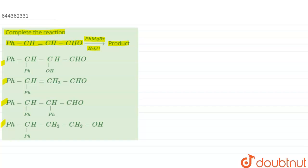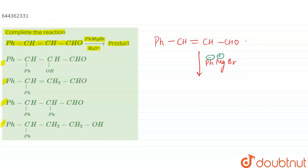Let us draw the reaction mechanism for this. Ph-CH=CH-CHO on reaction with PhMgBr. We can write Grignard reagent as Ph⁻ and MgBr⁺. Now, Ph will act as a nucleophile, and in this reaction, 1,4-addition will take place.